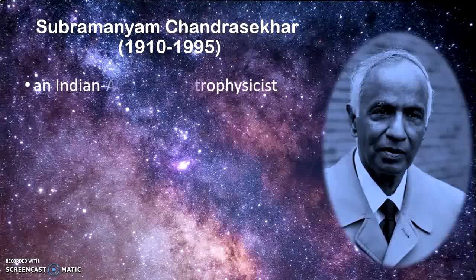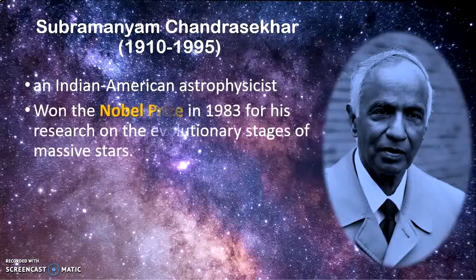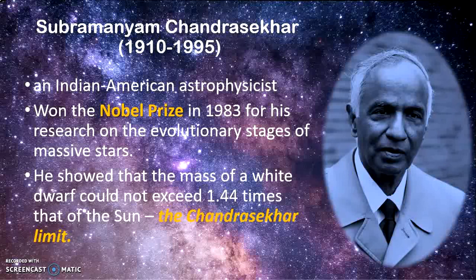Subramaniam Chandrasekhar was an Indian-American astrophysicist who won the Nobel Prize in 1983 for his research on the evolutionary stage of massive stars. He showed that the mass of a white dwarf could not exceed 1.44 times that of the Sun. This is known as the Chandrasekhar limit.